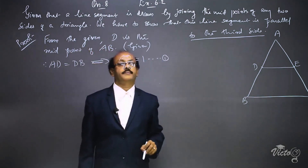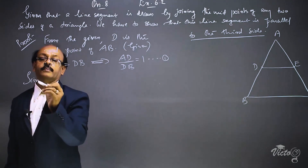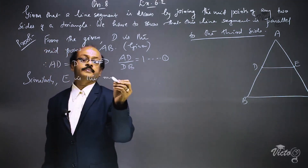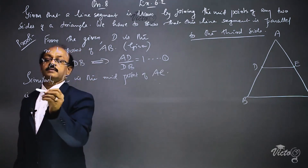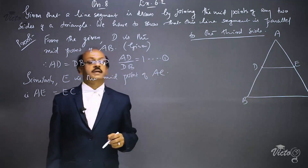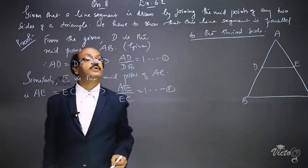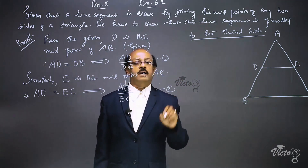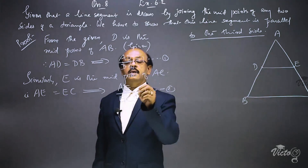Similarly, E is the midpoint of AC, which implies AE/EC = 1. We name this as equation number 2. So from equation 1 we have AD/DB = 1, and from equation 2 we have AE/EC = 1.